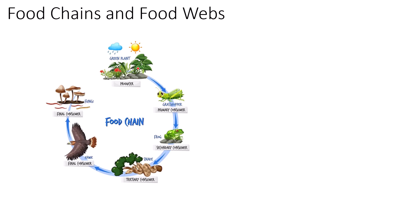In this particular food chain, our first consumer is a grasshopper, which feeds directly on the plants at the producer level. We call the first consumer a primary consumer. The second consumer in all food chains is a secondary consumer, which always eats the primary consumer — in this case the frog is eating the grasshopper. The third consumer is called the tertiary consumer; here it's the snake eating the frog.